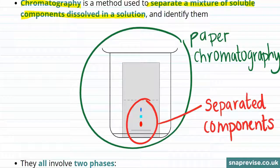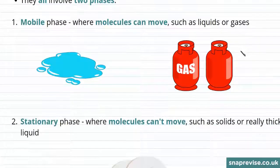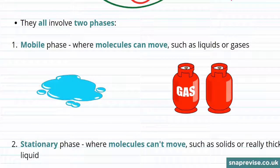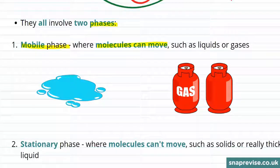Paper chromatography is just one type of chromatography. All methods involve two different substances which are known as phases. The first one of these is the mobile phase. The mobile phase is where the molecules in question can move. This means that a mobile phase is likely to be a liquid or a gas.